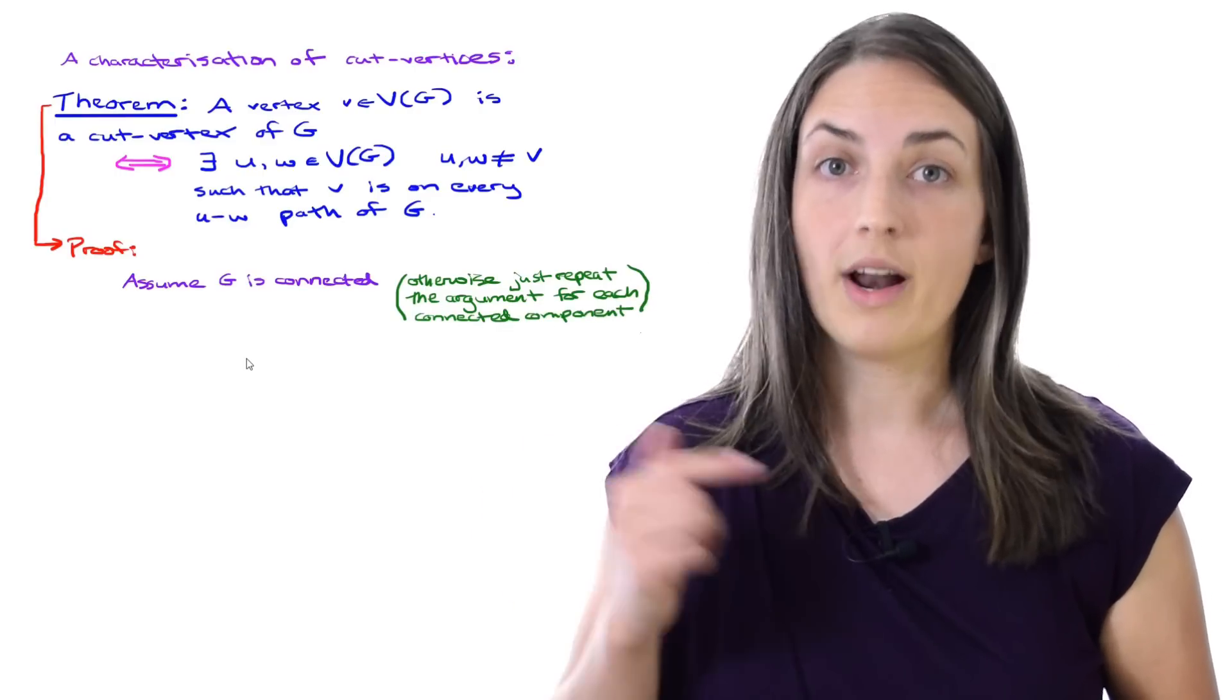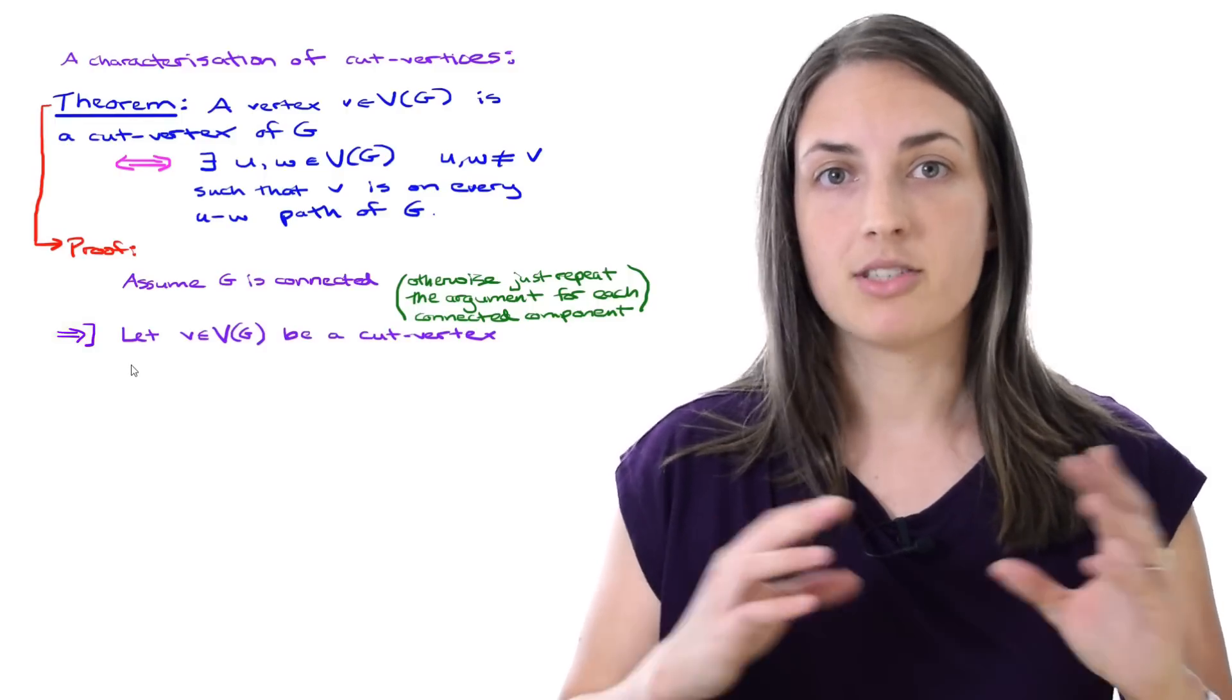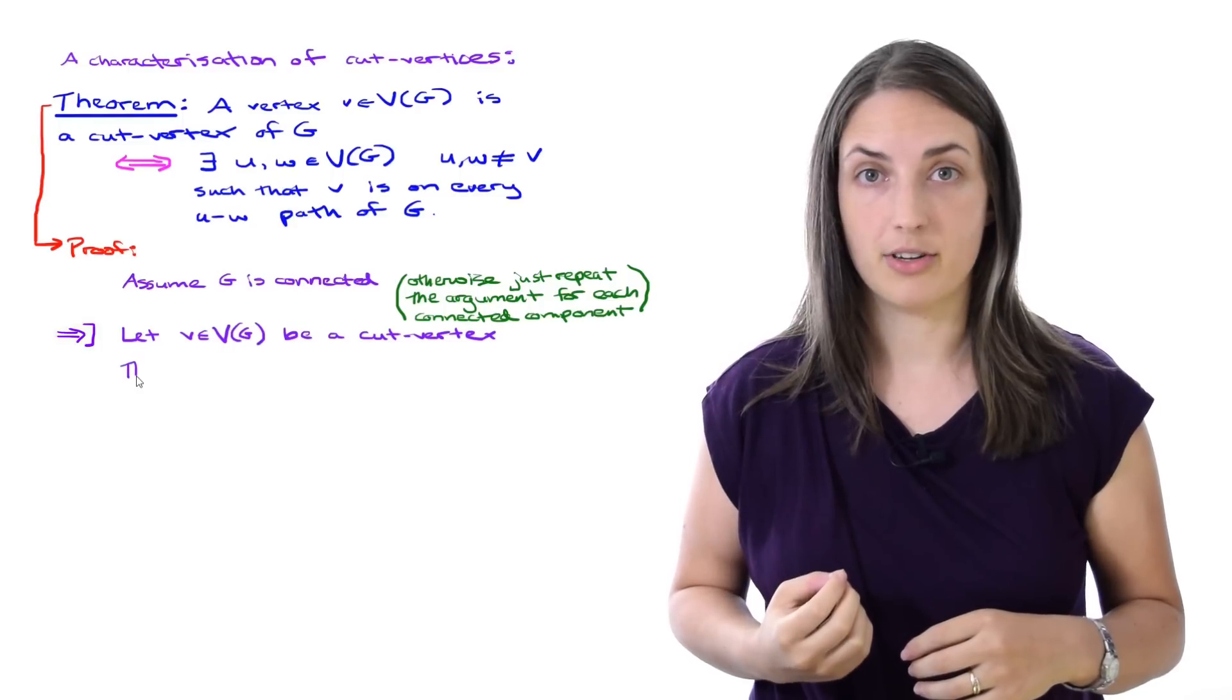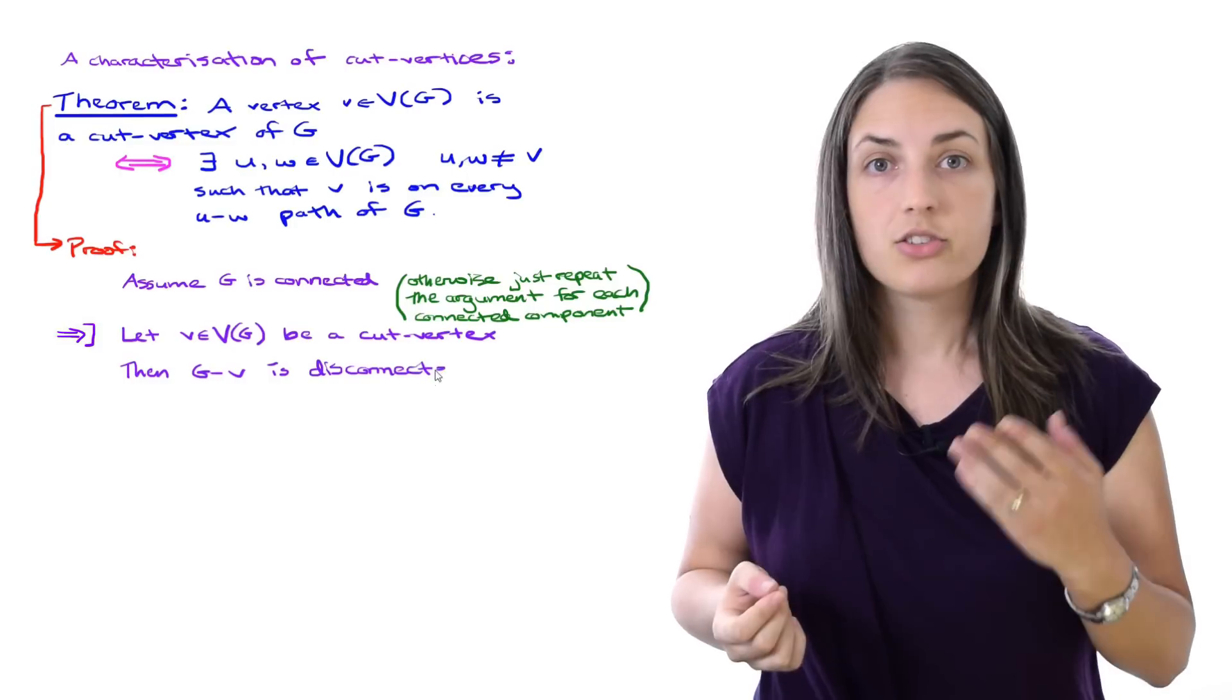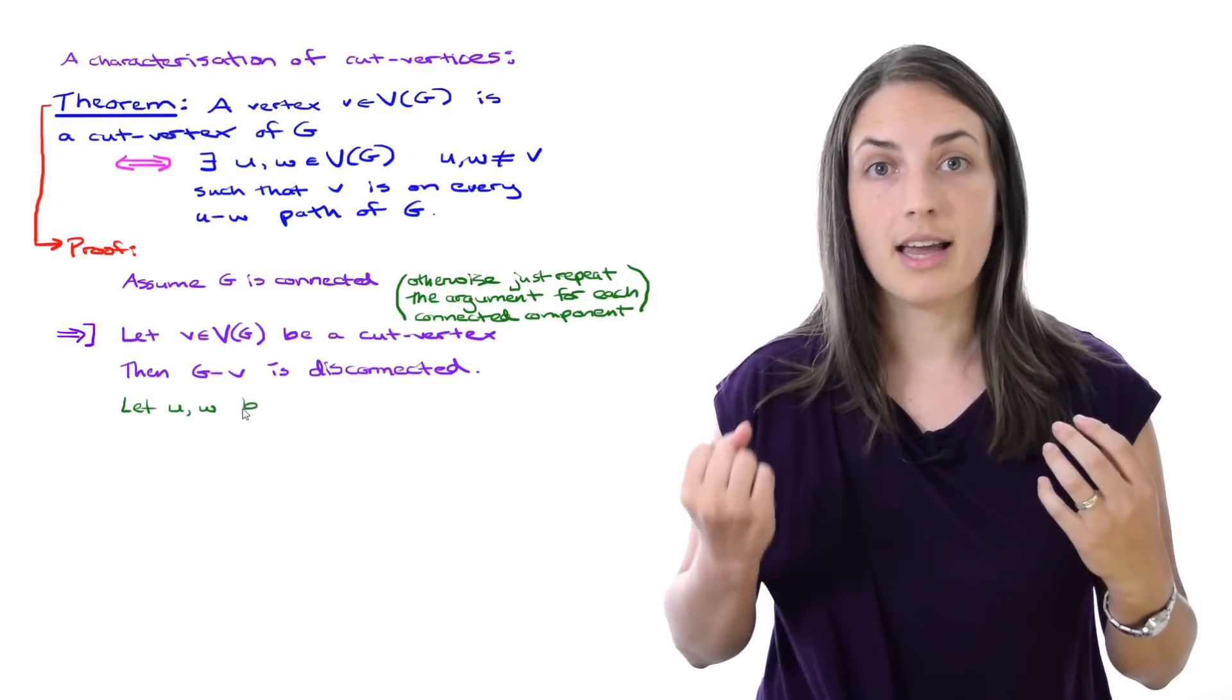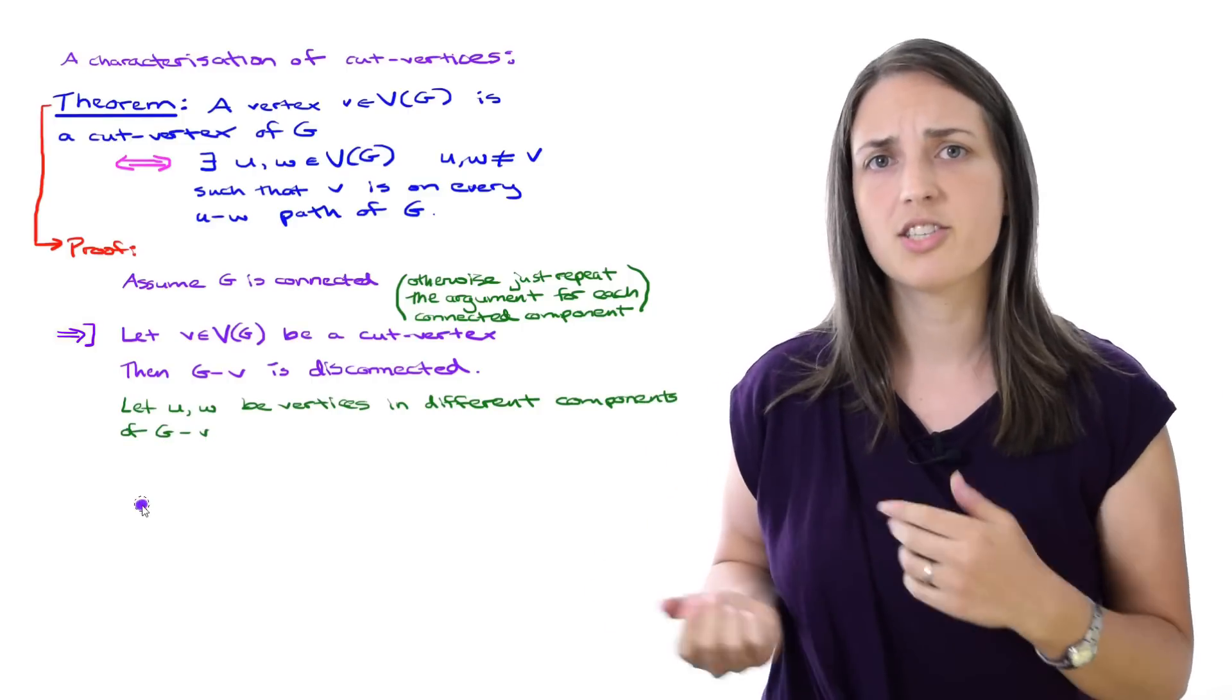Let's think about one direction of the proof. We will take a vertex V to be a cut vertex. Our aim is to show that then there will exist two vertices such that our vertex lies on every path between them. Since V is a cut vertex, G without V is disconnected. Now we can take a look at G without V and say there's at least two connected components. I'm going to let U be a vertex in one component and W be a vertex in a different component.